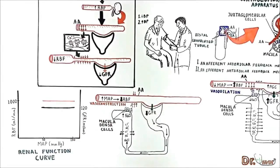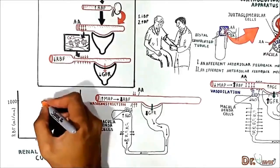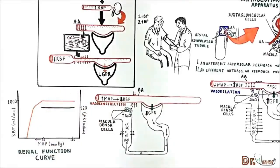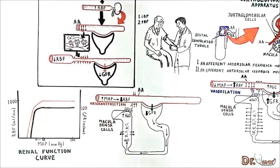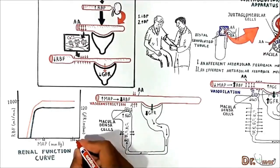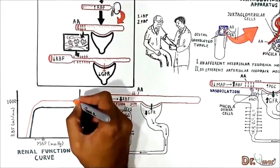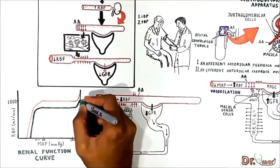If the mean arterial pressure drops below 80 mmHg, the renal blood flow also starts falling. As a consequence, GFR also starts falling in proportion to the renal blood flow. If the pressure increases to more than 180 mmHg, the renal blood flow increases and GFR also increases respectively.